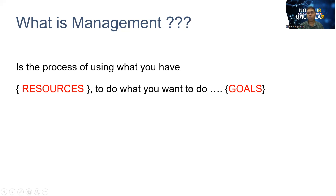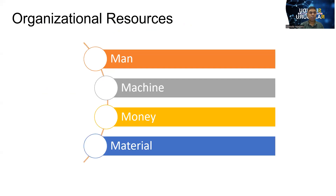What you want — those are the goals. What you have — those are the resources. That means if we can use available resources, and through some process we can achieve the expected results and goals, that is simply what we can define as management. When considering organizational resources, there can be several resources.